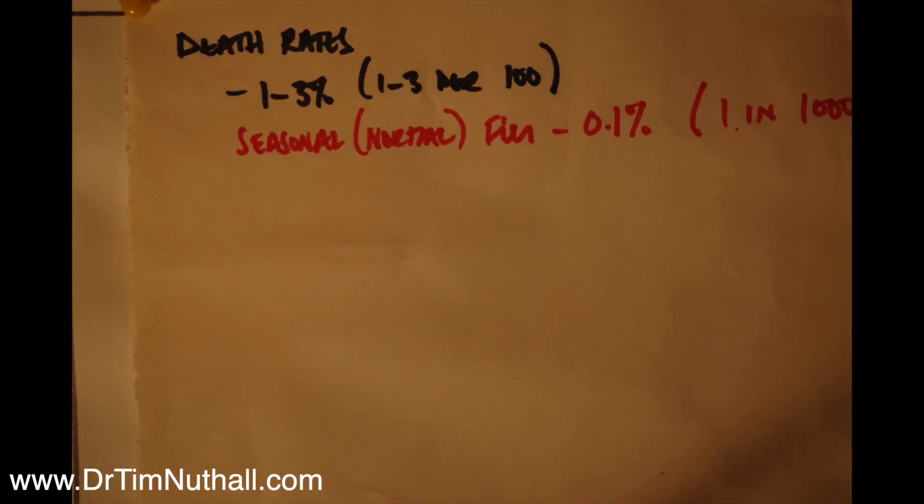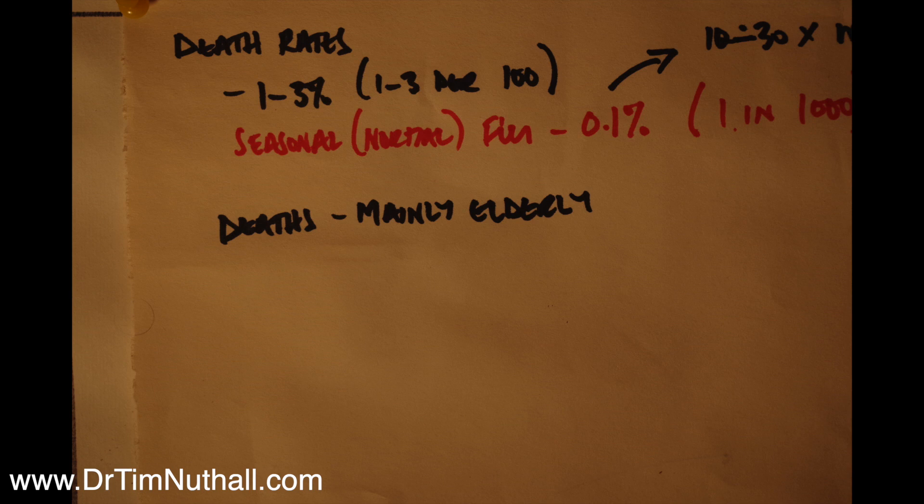With the flu from COVID-19, the death rate is in the area of about 1 to 3 percent. Most deaths are mainly confined to the elderly and especially those with underlying conditions.